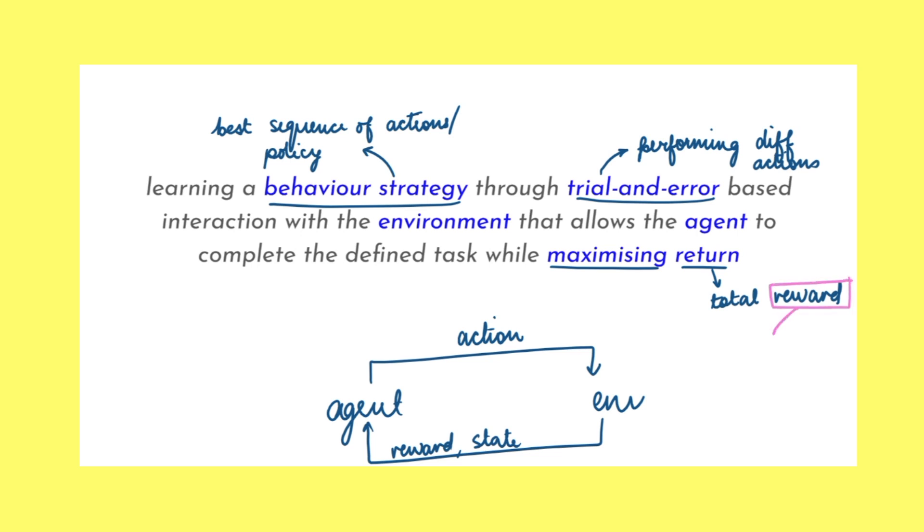The reward signal can therefore be thought of as an evaluator that guides the agent towards the appropriate direction. The idea seems pretty intuitive in theory, and surely the 2010s can't be the first time someone thought about trying this out. And you'd be quite right. In the 1980s, Andrew Barto, Richard Sutton and team made amazing contributions to the field. In fact, most of the work done today is built on the foundations laid out by them.